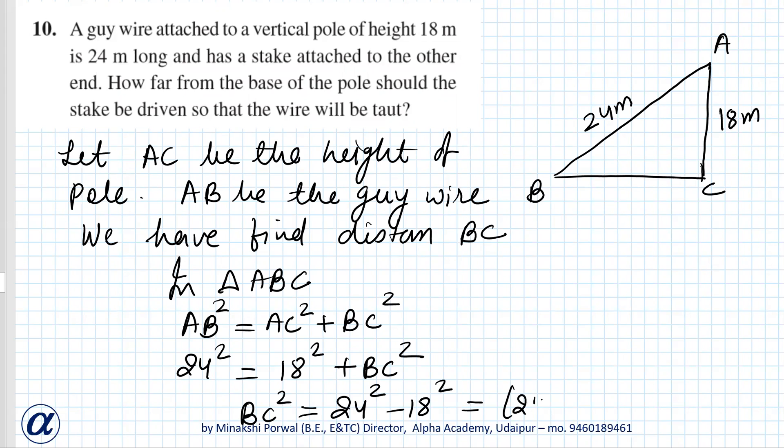That is equal to 24 minus 18, 24 plus 18. So 24 minus 18 is 6 and 24 plus 18 is 42.